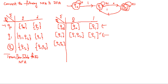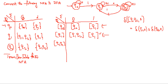Now check what happens if you apply 0 on {Q1, Q2} from the given NFA transition table. Delta of {Q1, Q2} on 0 equals delta(Q1, 0) union delta(Q2, 0). Applying 0 on Q1 gives {Q1, Q2}, and applying 0 on Q2 gives Q2. After combining, you get {Q1, Q2} — the same state.